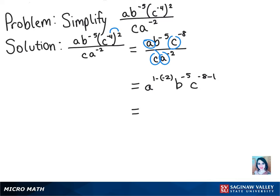Simplifying that will give us a to the 3rd power times b to the negative 5th power times c to the negative 9th power.